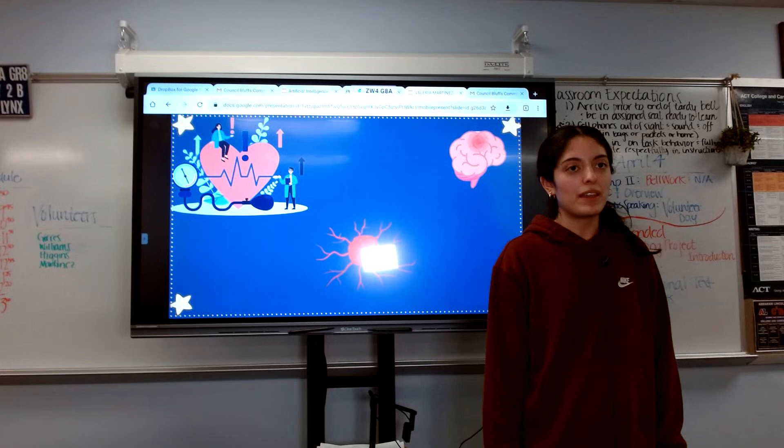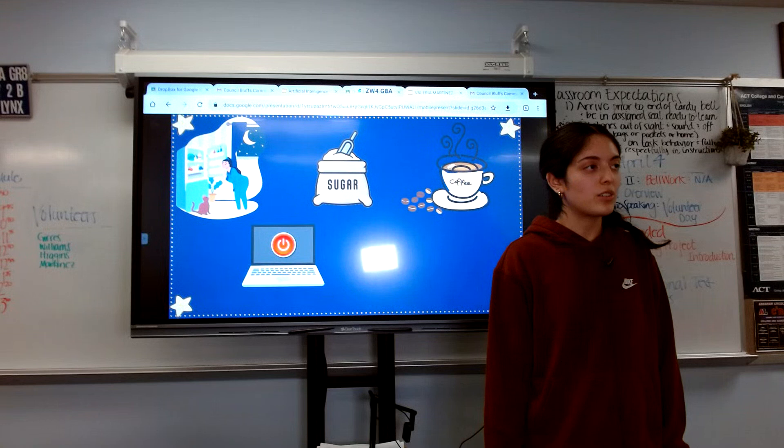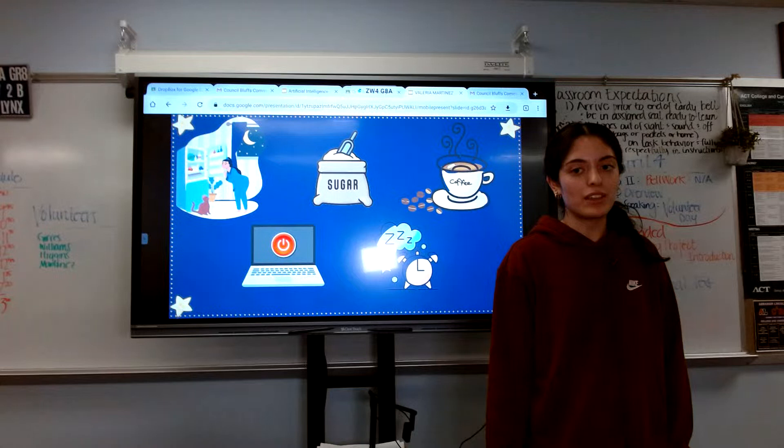Now if you have trouble sleeping, there are multiple tips that you can follow to improve your sleep schedule. Some of these tips include avoid late night snacking, avoid sugar and caffeine, and make sure to turn off any electronics two hours before you go to sleep. By following these tips, you should be able to have a better sleep schedule and improve your overall health.